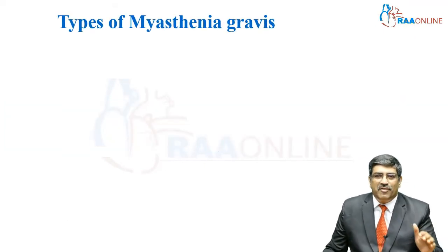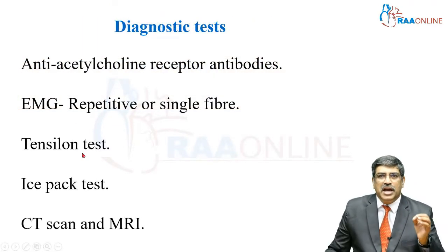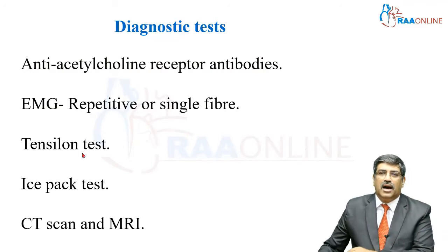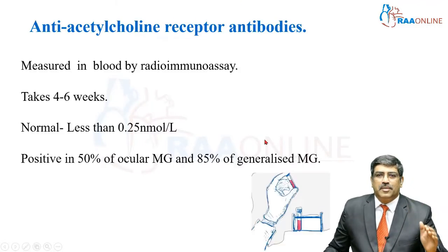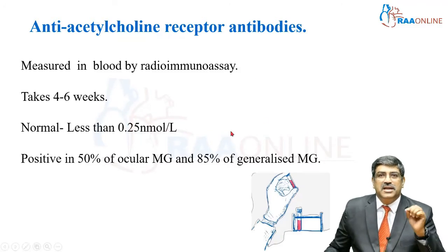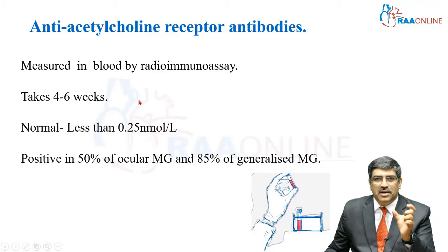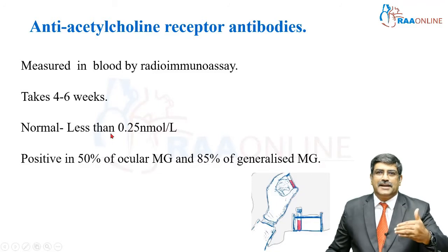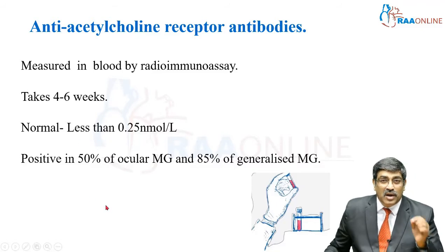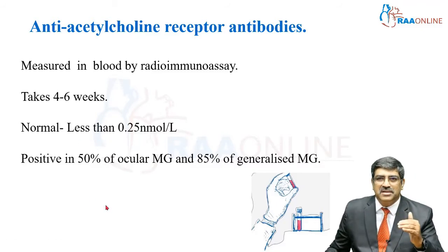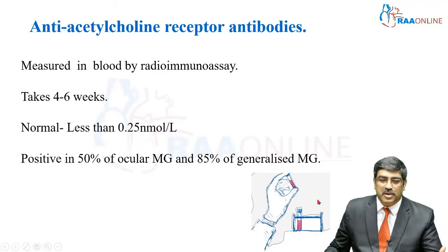Coming to the various types of myasthenia gravis. The first and foremost is ocular myasthenia. For the anti-acetylcholine receptor antibody assay, it is measured in the blood by radioimmune assay. It usually takes 4 to 6 weeks for the level to come. Normally it is less than 0.25 nanomole per liter. It is positive in only 50 percent of ocular myasthenia gravis, but in generalized myasthenia gravis it is positive in more than 85 percent of patients.